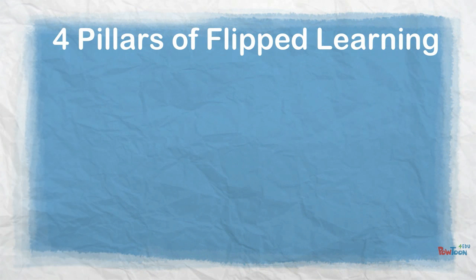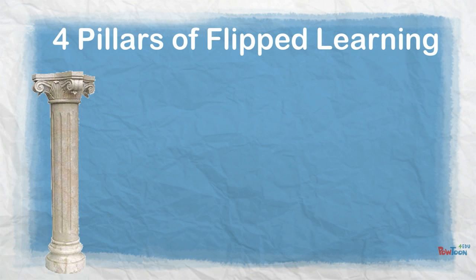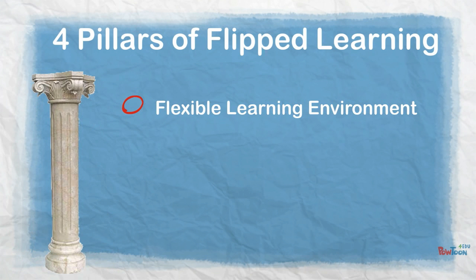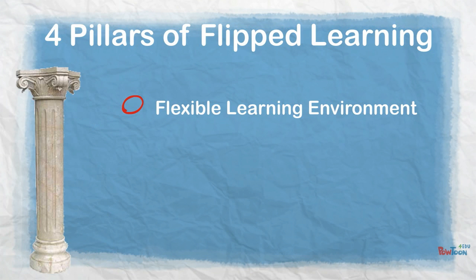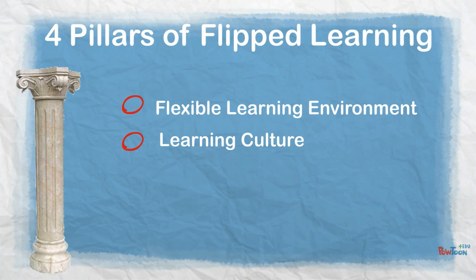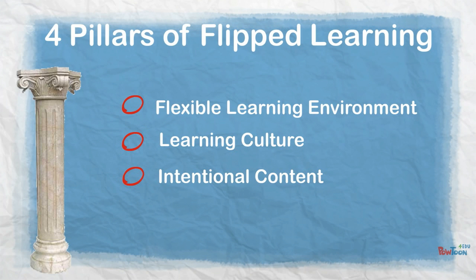The four pillars of flipped learning, as defined by the Flipped Learning Network, are the frameworks by which you can build your flipped learning lessons. First, it's a flexible learning environment — the spaces, time frames, and how students interact can look quite different. Second, the learning culture — this is a big shift, particularly for students who are used to learning in a passive way. Flipped learning puts the learning culture back onto the students and the teacher becomes truly the guide on the side. Third, intentional content — the teacher looks at which content can be delivered to students at home, typically the remembering and understanding aspects, and which content is best utilized in the classroom with higher-level thinking skills.